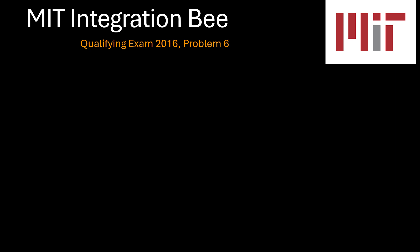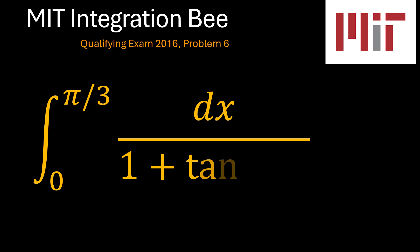So this is problem number 6 of the 2016 MIT Integration Bee qualifying exam, which is the definite integral from x equals 0 to x equals pi over 3 of 1 over 1 plus tan squared x.